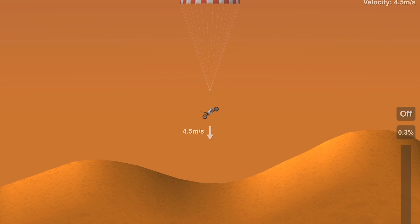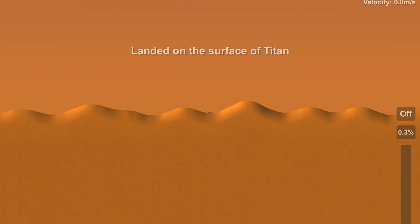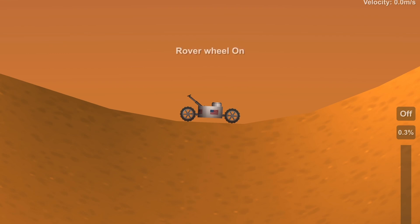And touching down on Titan in 3, 2, 1, 0, contact. Yay, we have landed on the surface of Titan. You can see all the sand hills now.